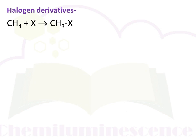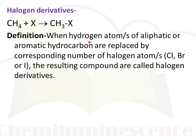So what is a halogen derivative? From this equation we can understand: here you can see methane, which is the parent compound. A halogen reacts with it and the product is CH₃X, that is methyl halide. One hydrogen of methane is replaced by a halogen atom — so it is a derivative synthesized from the parent compound by replacement of one hydrogen by halogen. The definition: when a hydrogen atom of aliphatic or aromatic hydrocarbons is replaced by a corresponding number of halogen atoms — either chlorine, bromine, or iodine — the resulting compounds are called halogen derivatives.